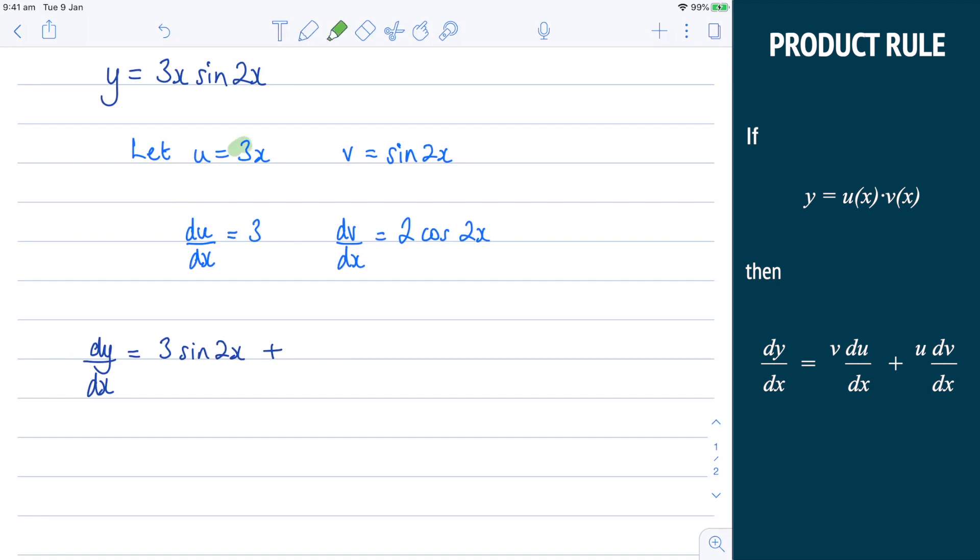Now, the u term here has got a 3 and we have a 2 here from the dv by dx. That's going to give me 6. And then I have the x cosine 2x.